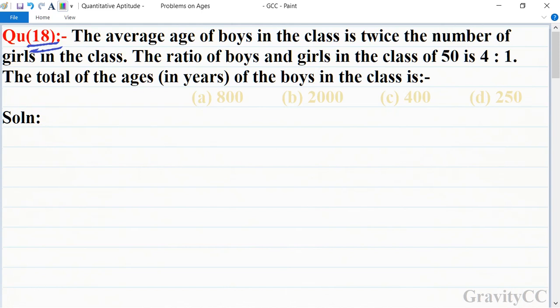In this question, the total number of students in the school is 50, and the ratio of boys and girls is given as 4:1. So the number of boys equals 4 plus 1 equals 5.